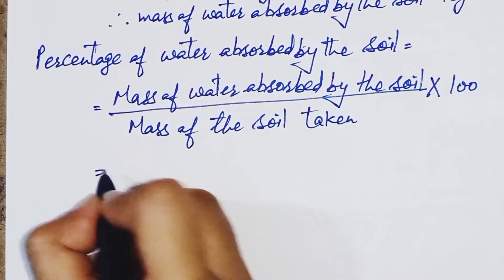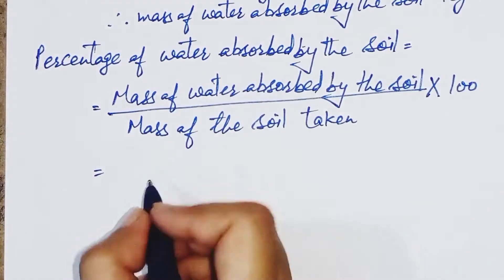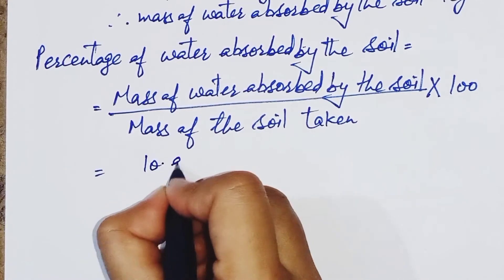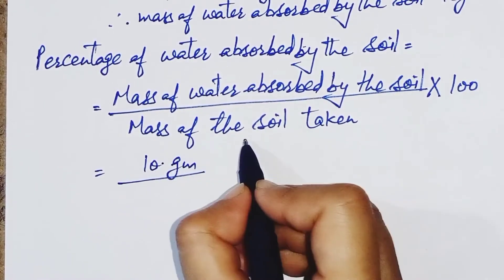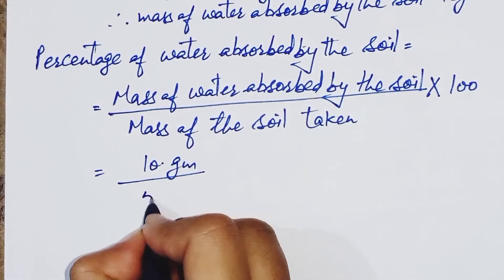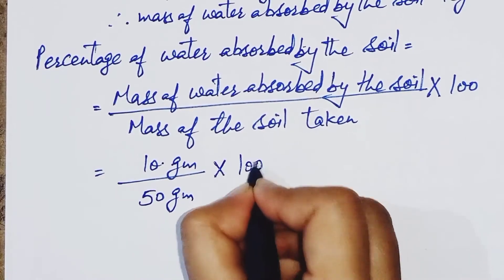Now mass of water absorbed by the soil is 10 gram, so write it here 10 gram, upon mass of the soil taken is 50 gram, multiply it by 100.